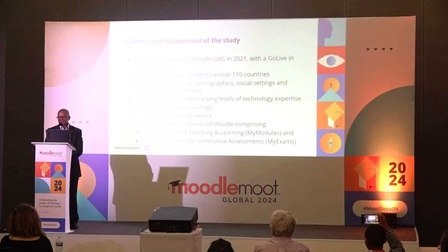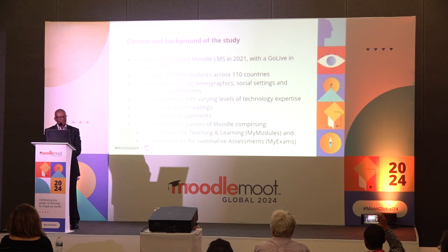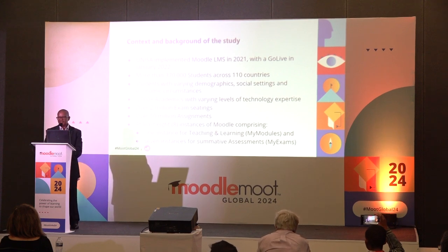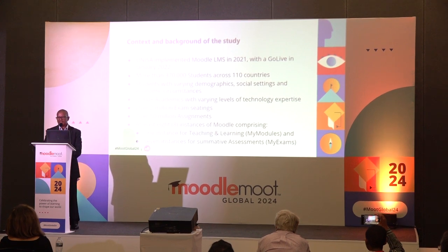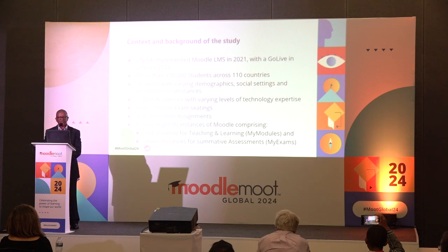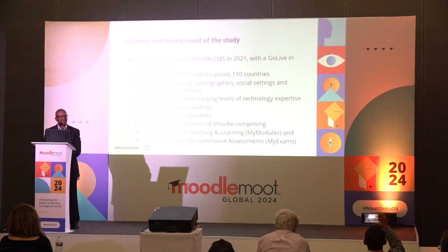Students obviously from varying demographics, social settings, and economic circumstances. We have 2,000 plus academics. In terms of our teaching and learning, over 2 million exam sittings every year — two sittings in mid-year and end of year. Throughout the year, plus minus 50 million formative assessments. In terms of the Moodle architecture, we have eight instances of Moodle — one being the big one for teaching and learning and formative assessment, and the other instances divided per college for summative assessment.